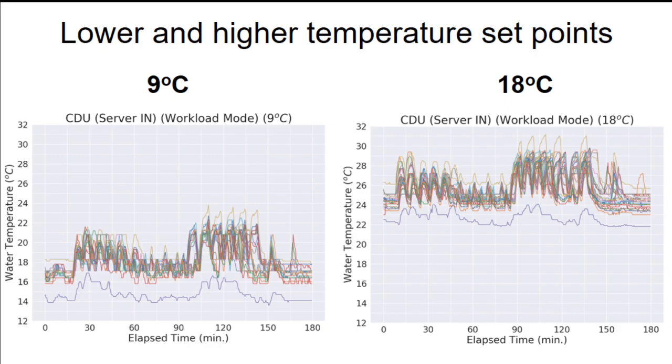And now these graphs show the inlet temperature when using 9 and 18 degrees Celsius as the temperature set point. And the outlier plot with lower temperature compared to others is from the last CDU or cooling distribution unit, responsible for the compute rack with smaller number of nodes.